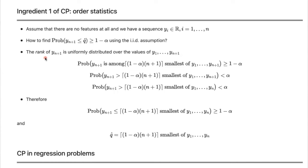Except we have a small problem: the first n data points used for training have been seen by the model F-hat, so we expect their residuals to be smaller. For the test data point, the model hasn't seen it during training. If your model overfits, the residual for the test point is probably significantly higher than for the training points, meaning the rank of the residual R_{n+1} is not uniformly distributed — violating our ingredient one assumption. This takes us to ingredient two of CP: the calibration set.